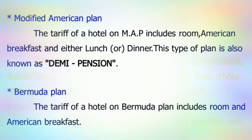Modified American plan: the tariff of a hotel on MAP includes room, American breakfast, and either lunch or dinner. This type of plan is also known as demi-pension. Bermuda plan: the tariff of a hotel on Bermuda plan includes room and American breakfast.